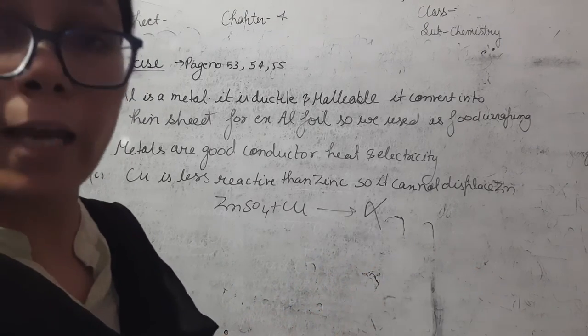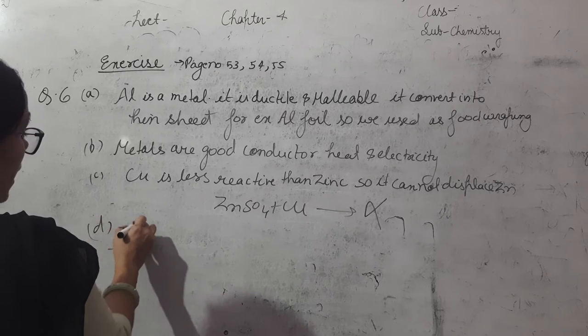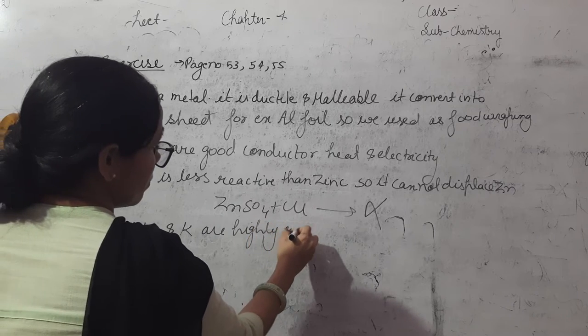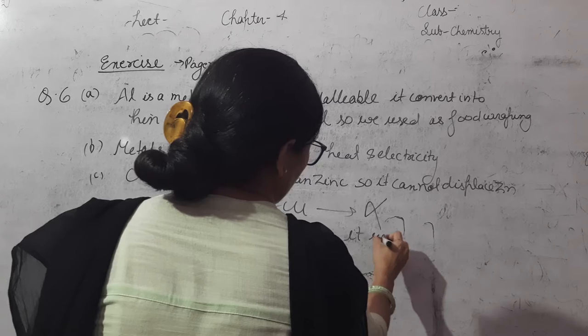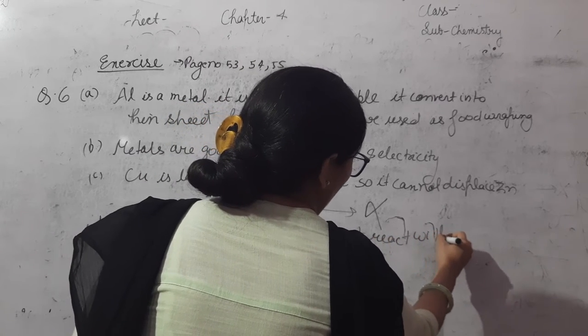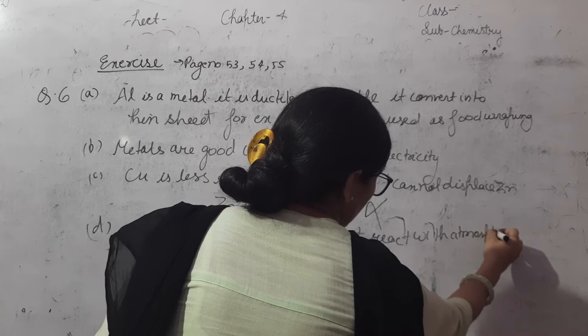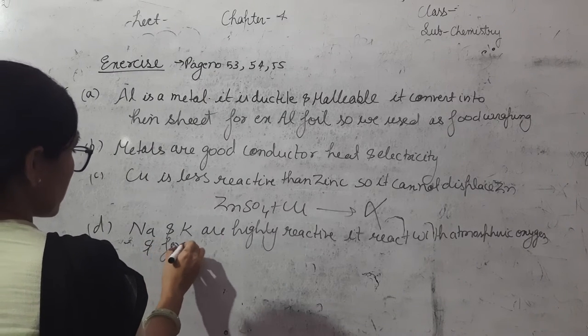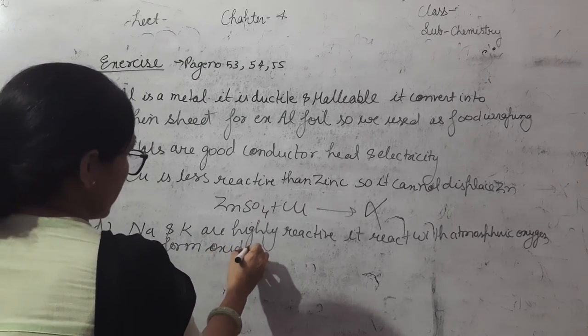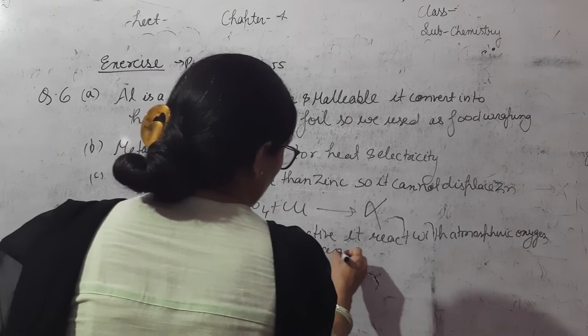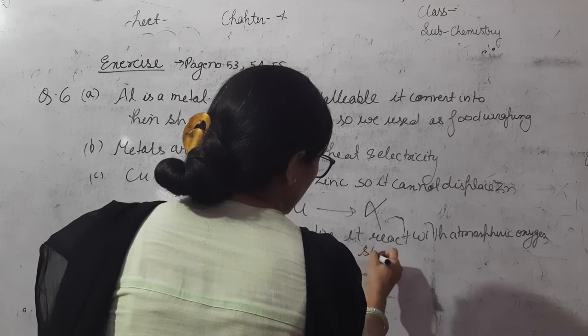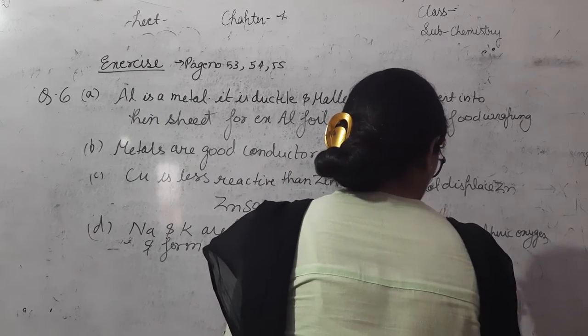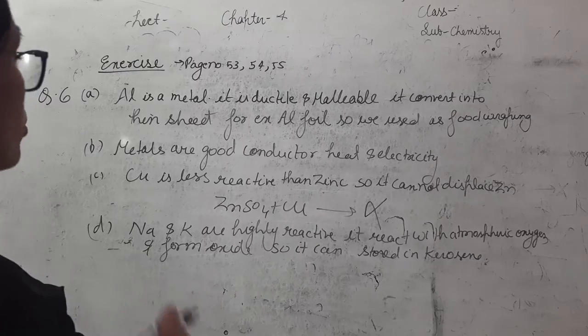Next one is sodium and potassium are stored in kerosene. Sodium and potassium are highly reactive. It react with atmospheric oxygen and form oxide, so it can be stored in kerosene. These are the answers of question number 6.